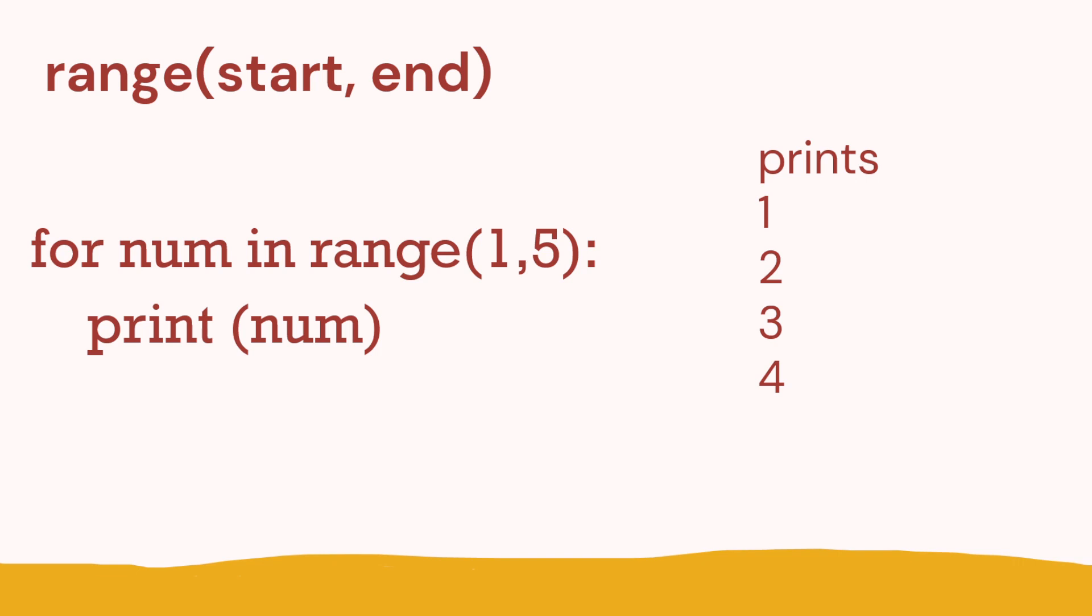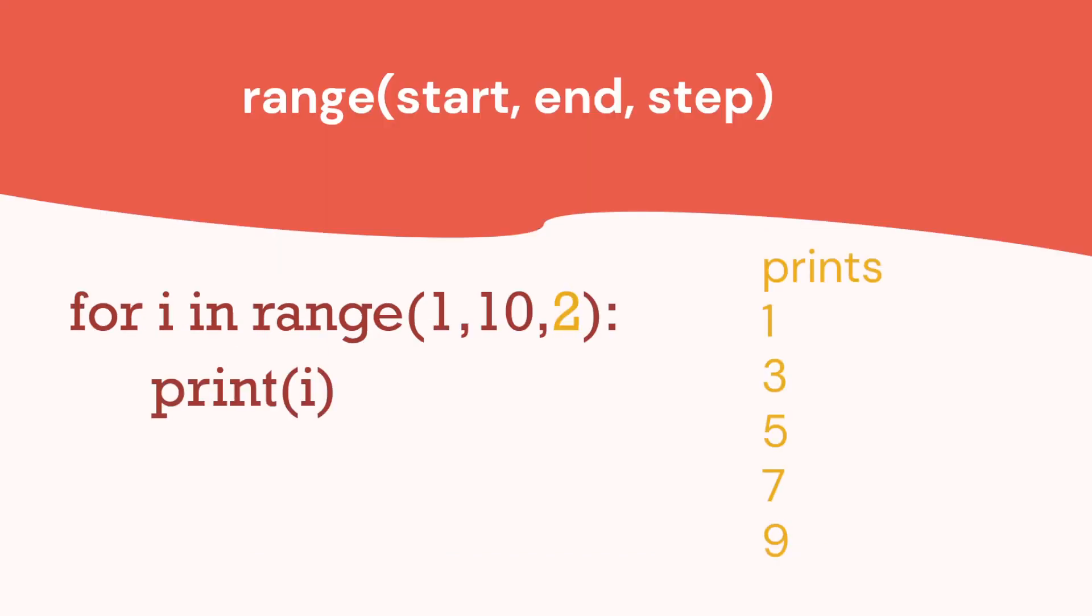Now if we've got 2 numbers inside range, the first number is where we start. The second one is the end. Again, we don't include it. So 1, 5 will print 1, 2, 3, 4. Finally, if there's 3 numbers inside range, the first number is the start. The second number is the end, not included. And the third number is step. So here we start at 1. We step 2 to 3. Step 2 to 5. Step 2 to 7. Step 2 to 9. And then that's completed because the next number would be 11, but we finish the range at the end of number 10.